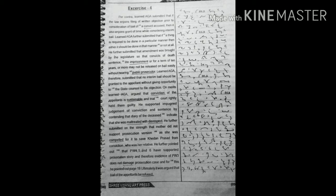He further pointed out that PW 4, 5, and 6 have supported prosecution story and therefore evidence of PW 3 does not damage prosecution case, and for this he pointed out page 19. Ultimately, it was argued that bail of the appellant be refused.